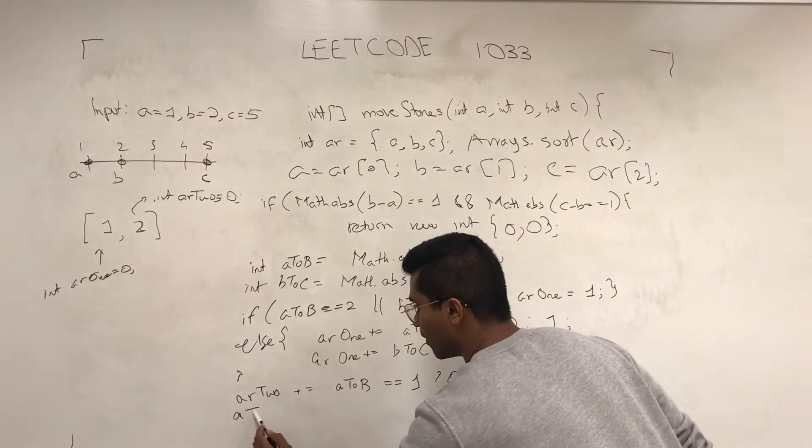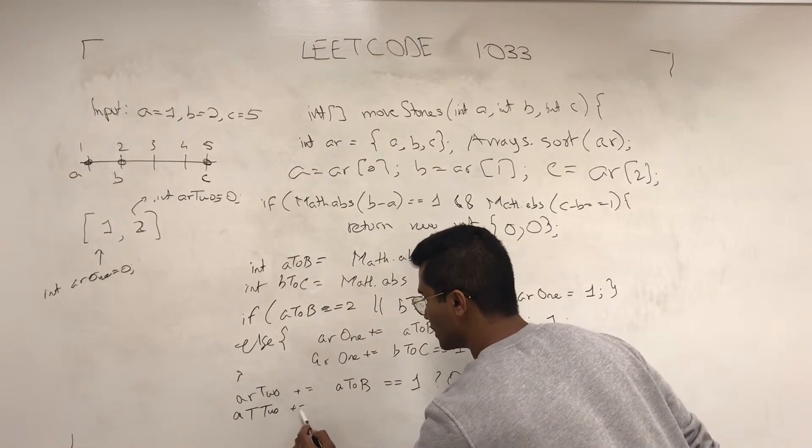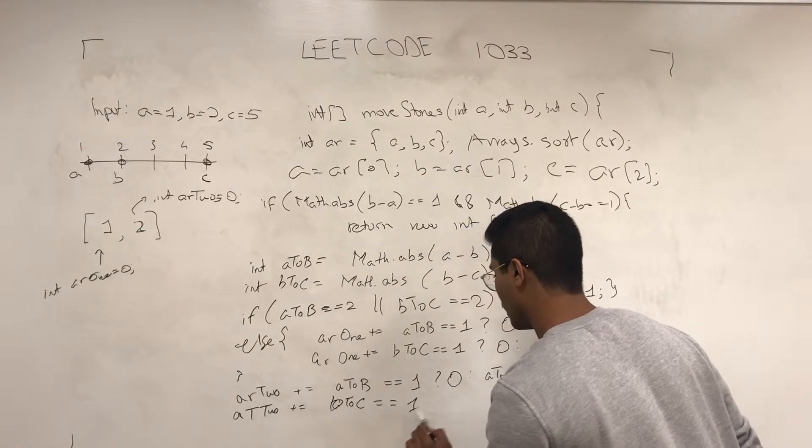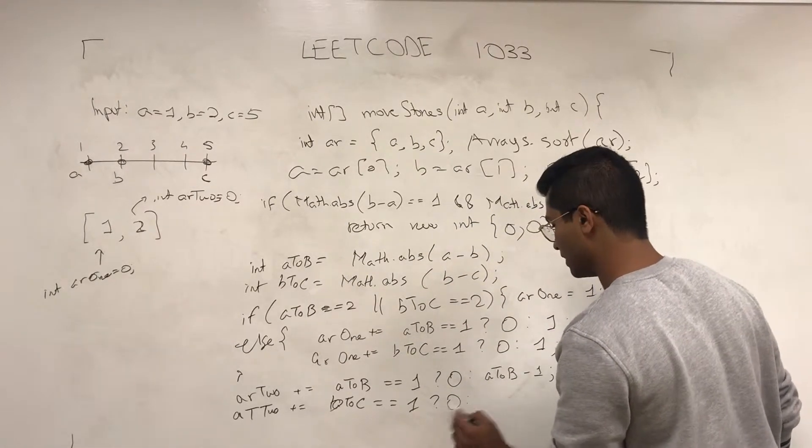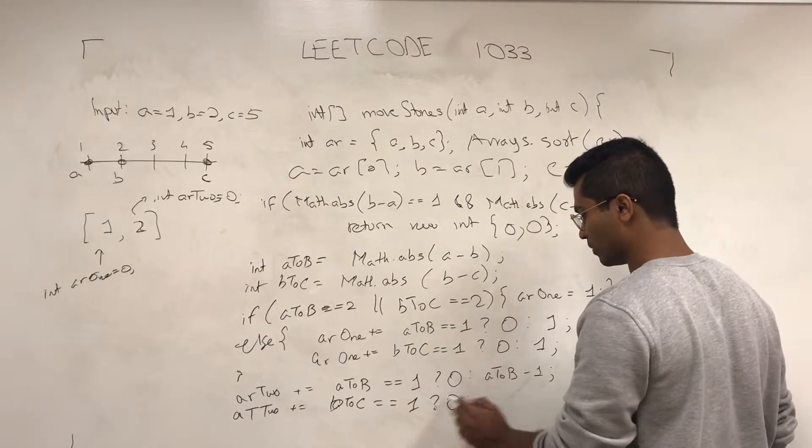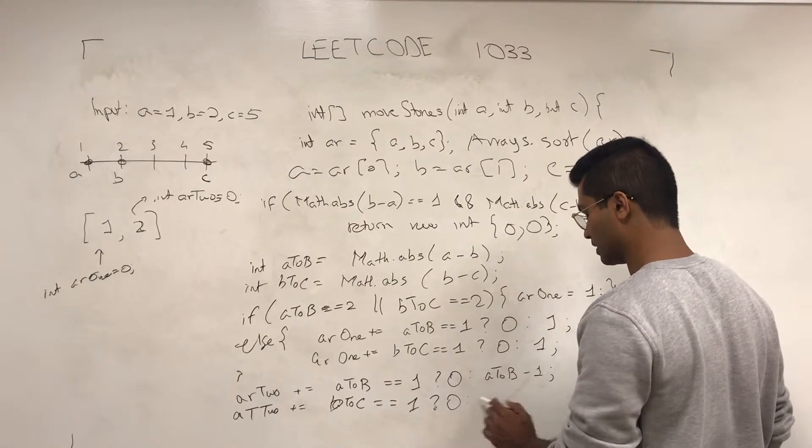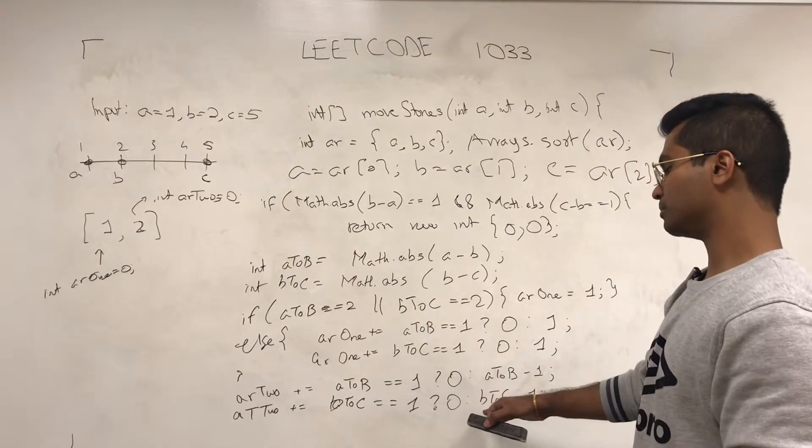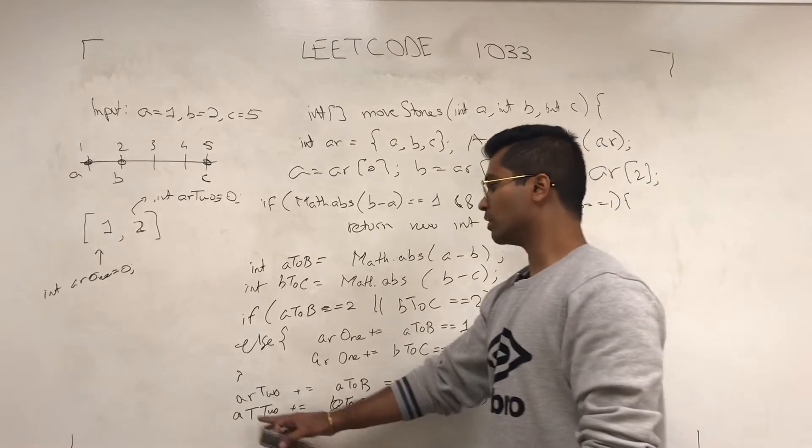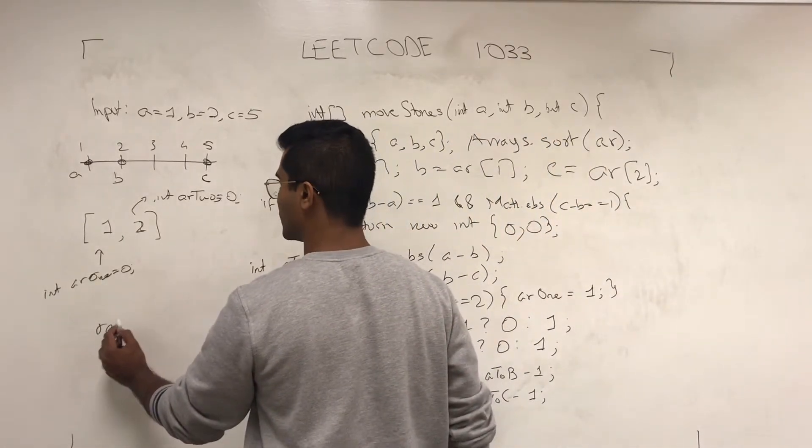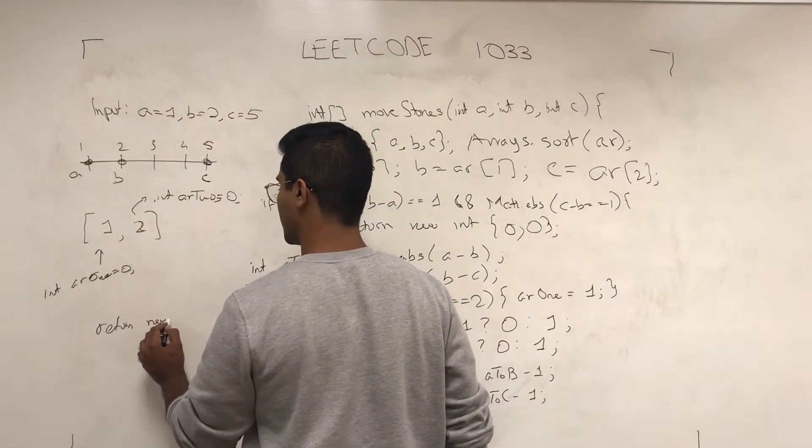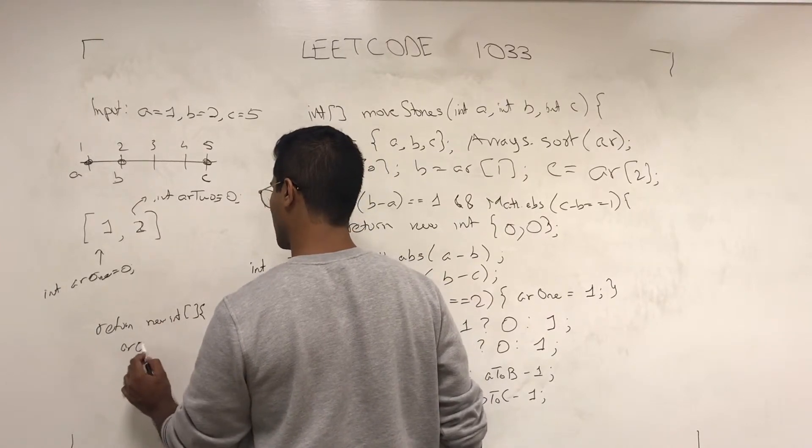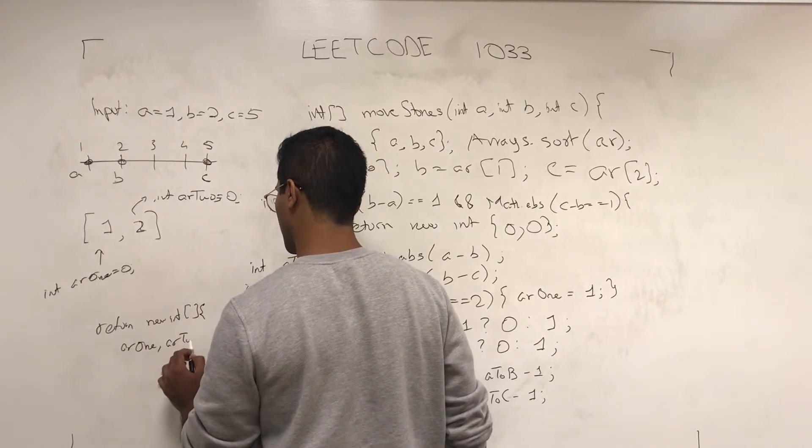And then AR2 is again incremented by BtoC. Is it 1? No. If there's only 1 away, then you just do BtoC minus 1. And that's how you find AR2. Once you find this, all you have to do is say return new int[AR1, AR2].